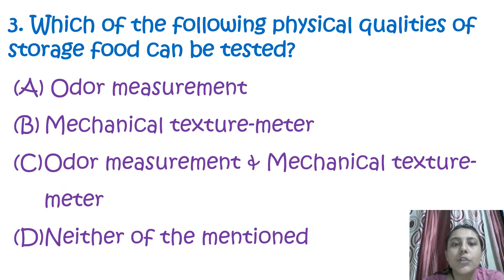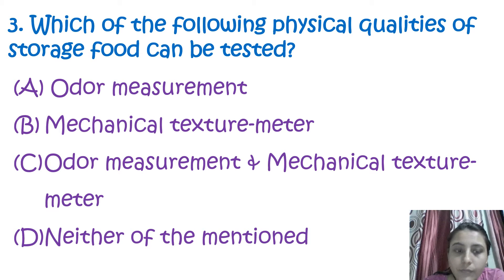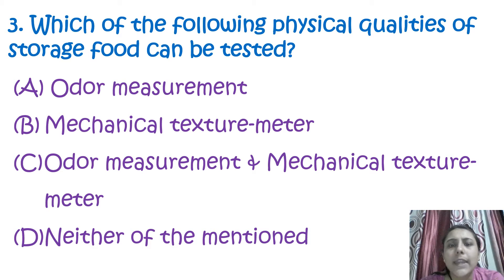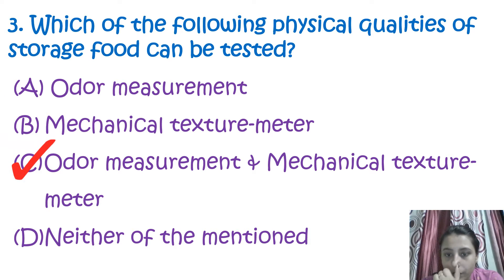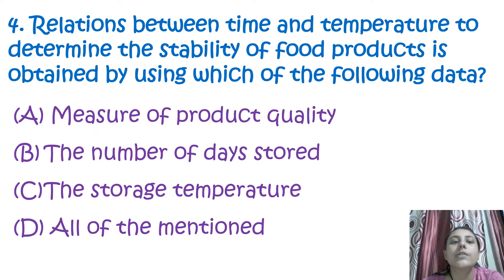The next question is: which of the following physical quantities of storage food can be tested? The options are odor measurement and mechanical texture meters. Both can be measured, so the correct answer is odor measurement and mechanical texture meter.